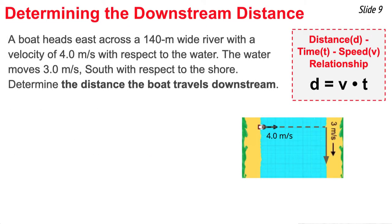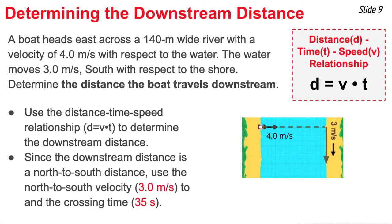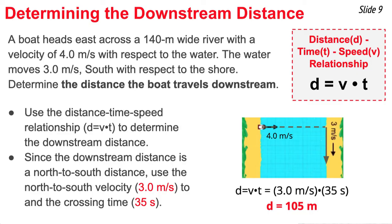The final question is to determine the distance the boat travels downstream. Because it's a distance question, I use the distance equation again: distance equals velocity times time. To calculate a downstream (north-to-south) distance, I need the north-to-south velocity, which is 3.0 meters per second — that describes how fast the boat travels southward down the river. Combining that velocity with 35 seconds gives 105 meters downstream.